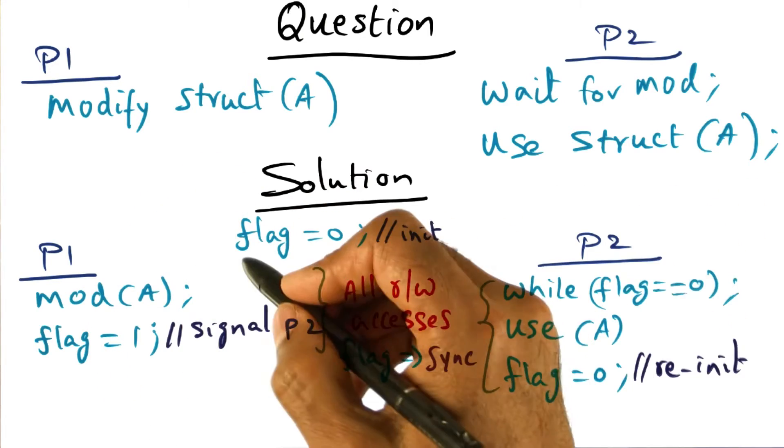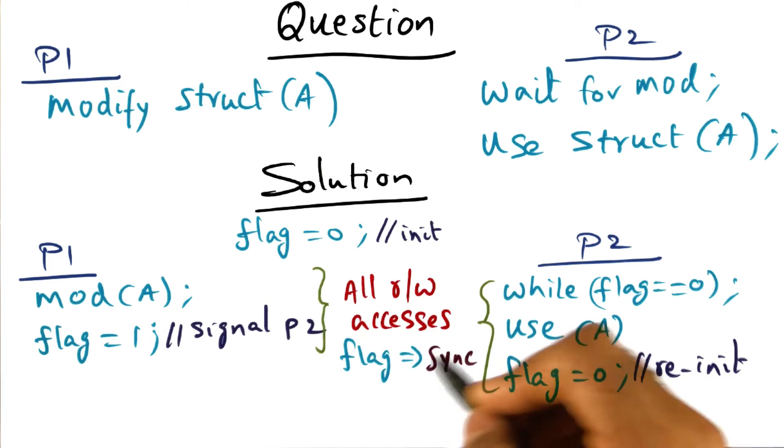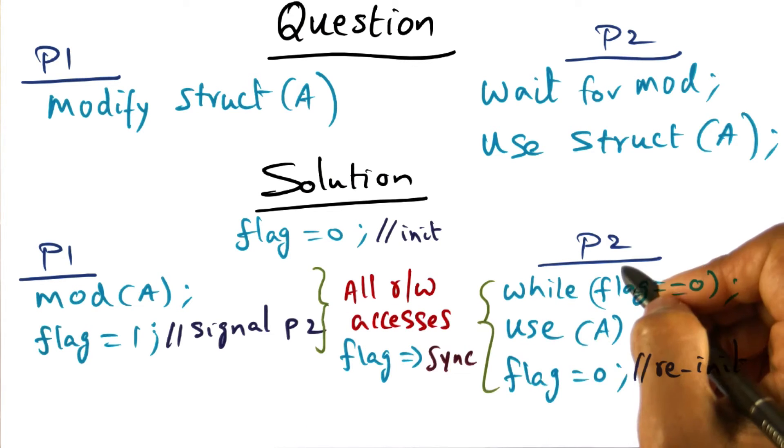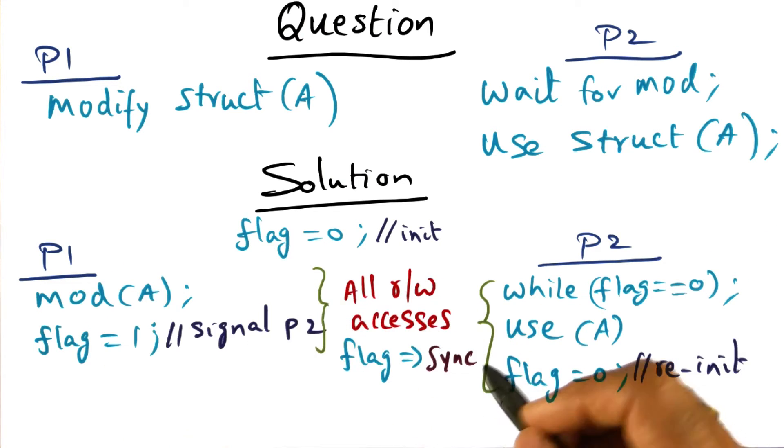P1 and P2 know that this is the way by which they're signaling each other that something that this guy is waiting on is available from P1. And so it's a synchronization variable.